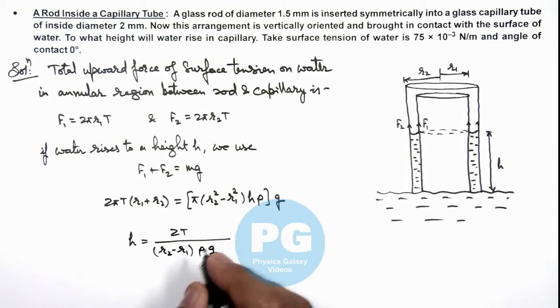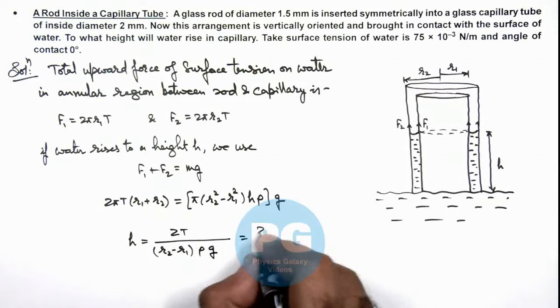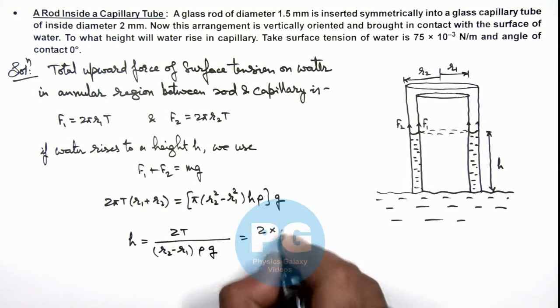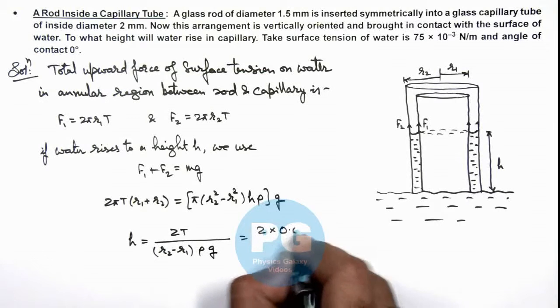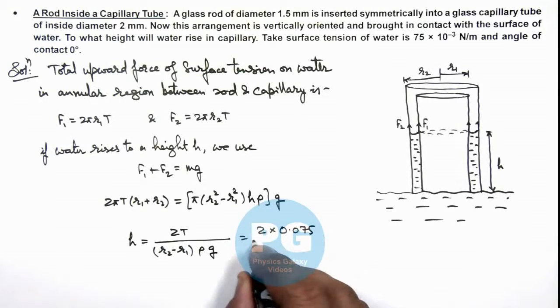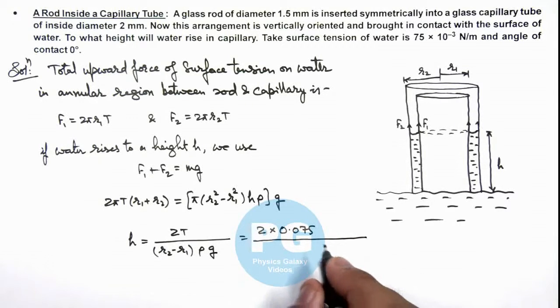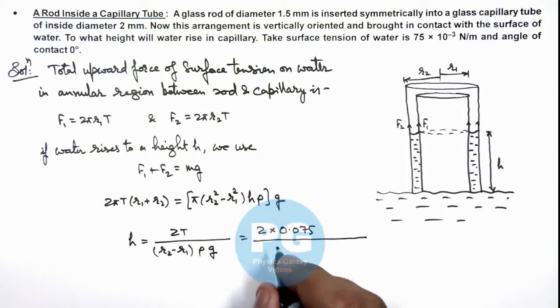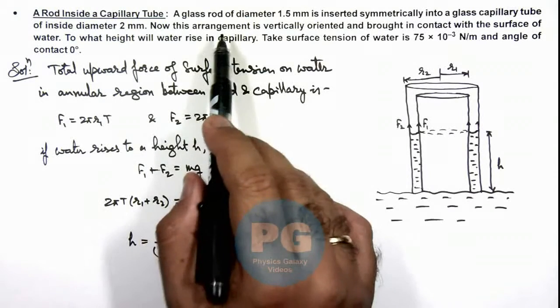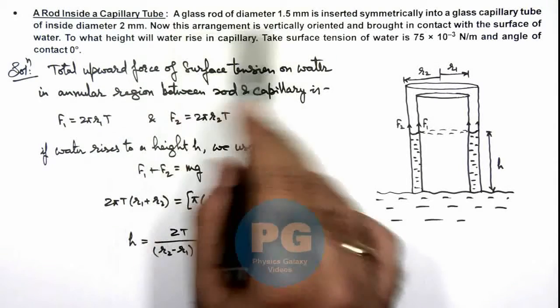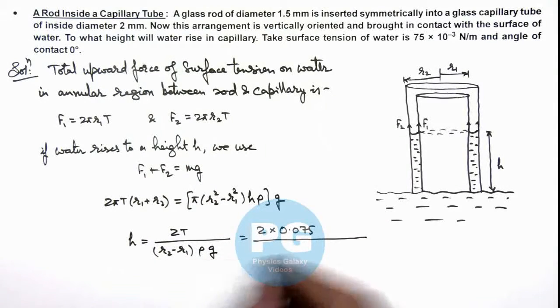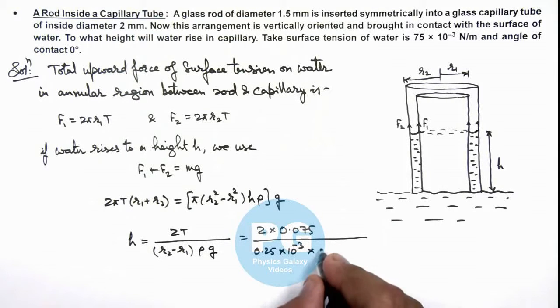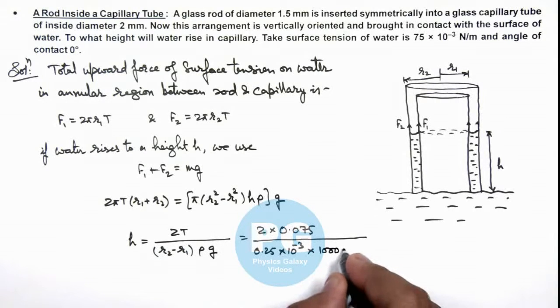If we substitute the values here, this is 2 multiplied by surface tension given as 0.075 divided by r₂ minus r₁. Here we are given that the diameter difference is 0.5 mm, so the radius difference is 0.25 × 10⁻³, multiplied by density of water taken as 1000 and g we can consider as 10.